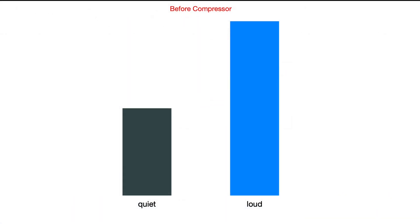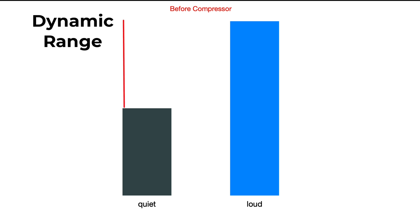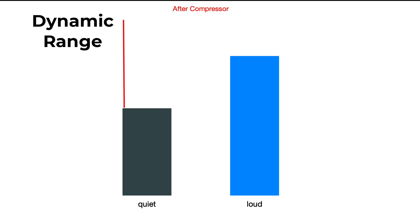This visual will help you understand what the compressor is. Let's assume this is the peak level of the quiet sounds and this is the peak level of the loud sounds. The gap between these two is called the dynamic range. The job of the compressor is to reduce the dynamic range — reduce the gap. If we can reduce the height of the loud sounds, the gap will decrease. For the purpose of this illustration, I have reduced the height of the loud bar.